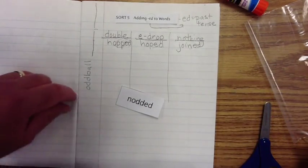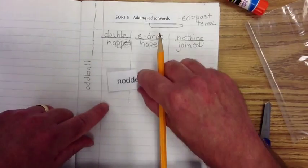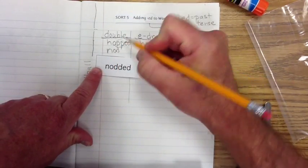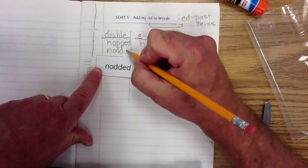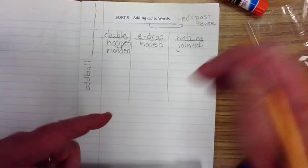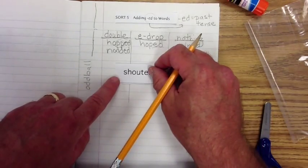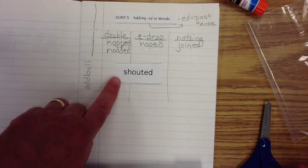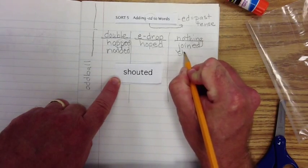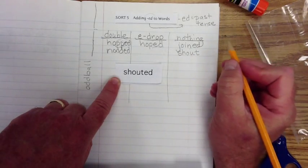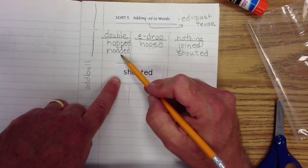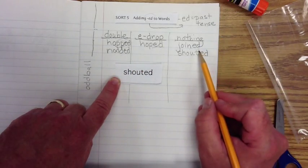We have NODDED. As you can see, we have the double consonant. The base word must be NOD — when we add ED, we have to add an extra D, the same consonant, and then the past tense ED. Now let's take a look at SHOUTED. We don't see the double consonant. The base word is SHOUT, so we're just adding ED — we're not adding an extra consonant like we do with the double.